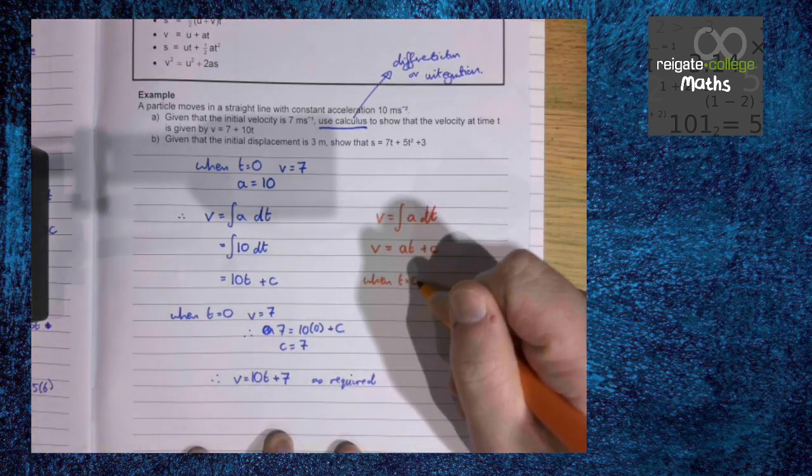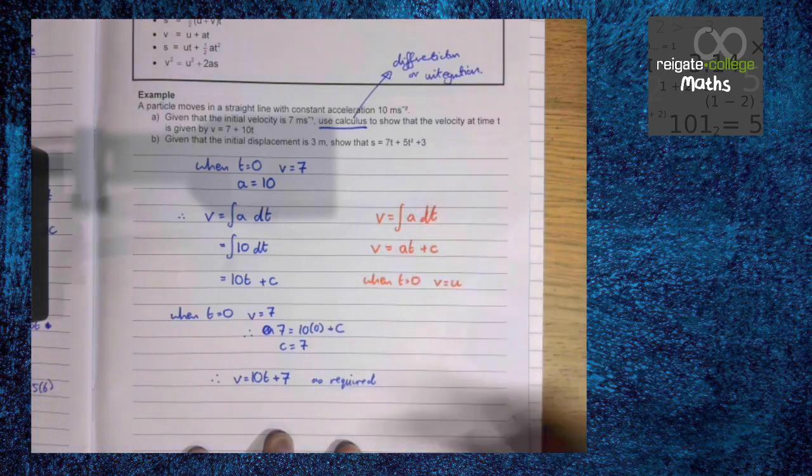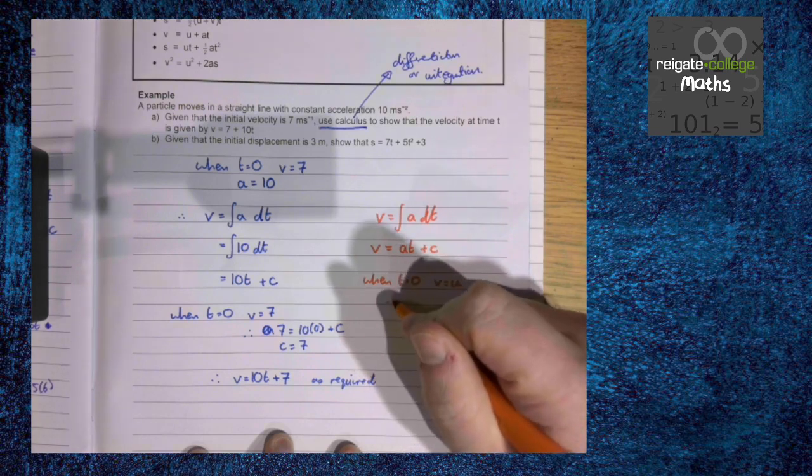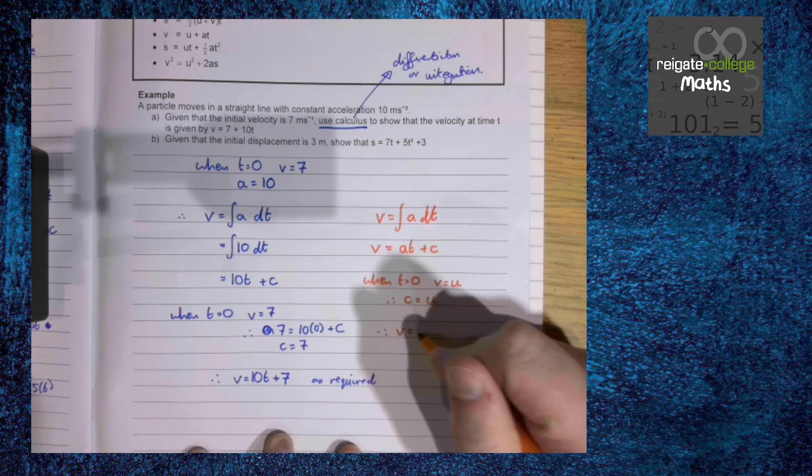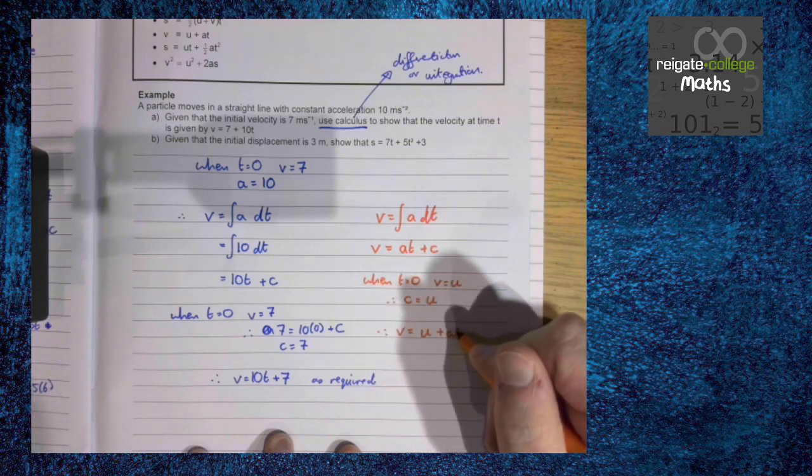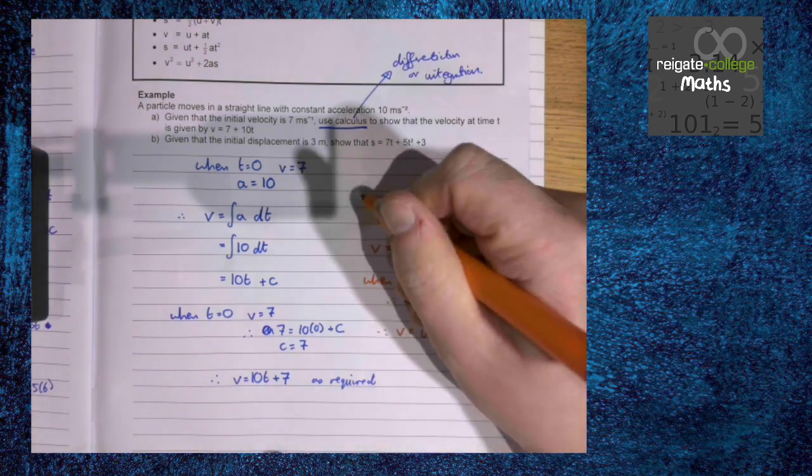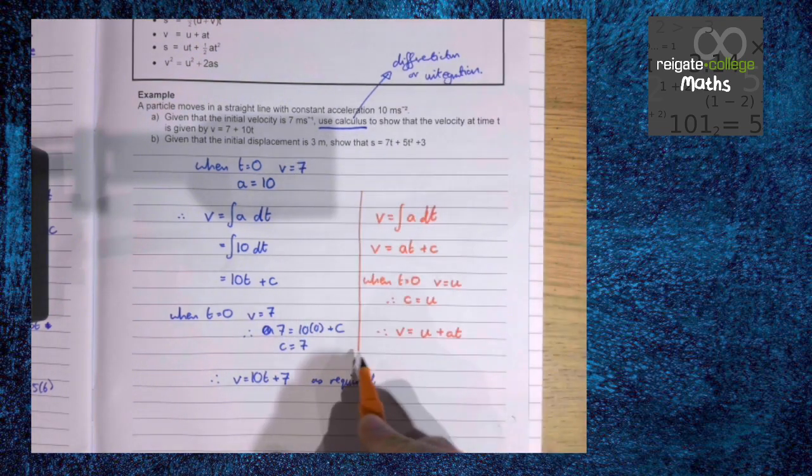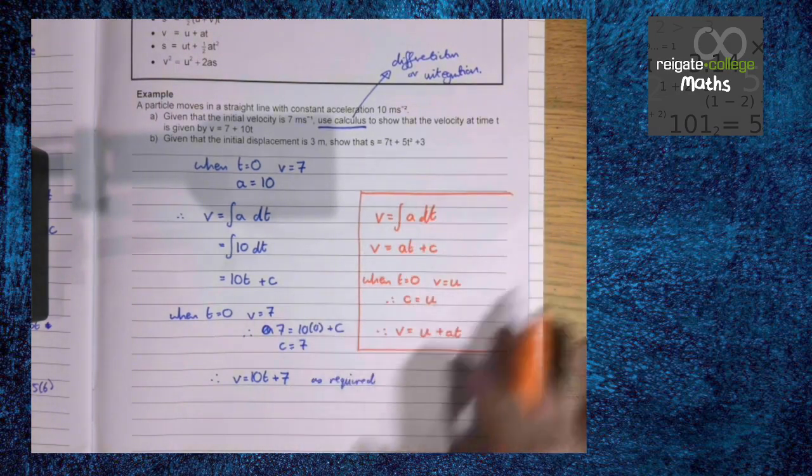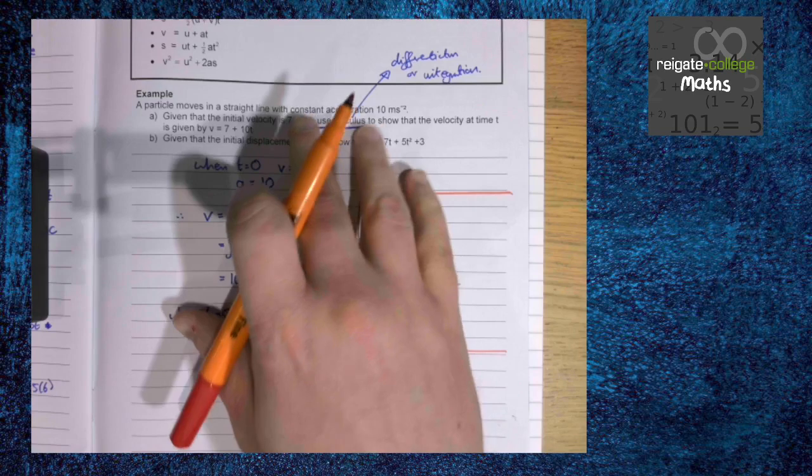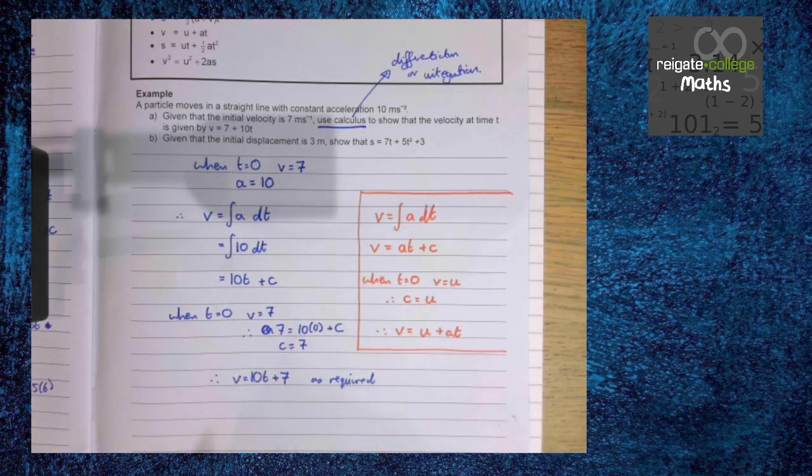When t is 0, v is u because it's the initial velocity. So therefore c is u, meaning v equals u plus at, as we know from the SUVAT equations. You may be asked to derive some SUVAT equations using calculus and this is how you do it. But that's effectively what we've done here, just used v equals u plus at in a different way.